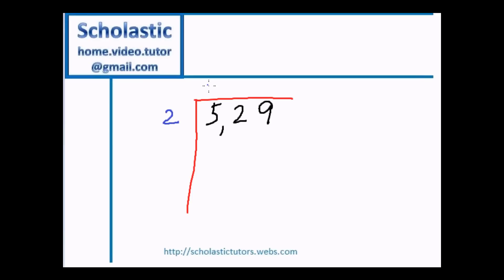2 times 2 is 4. We will have 5 take away 4 is 1. Now what we do is we take 29 here, two numbers, and bring them down here to get 129. So please note that we bring both numbers together.